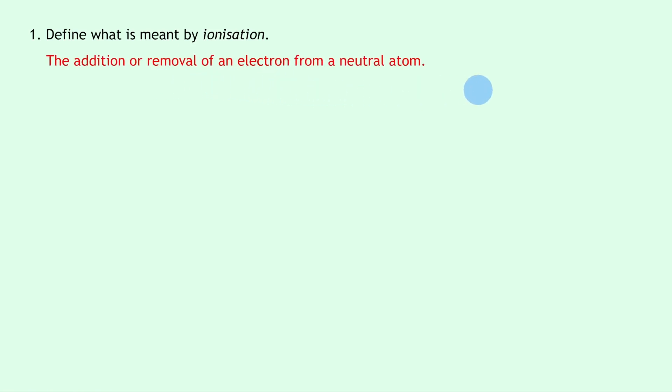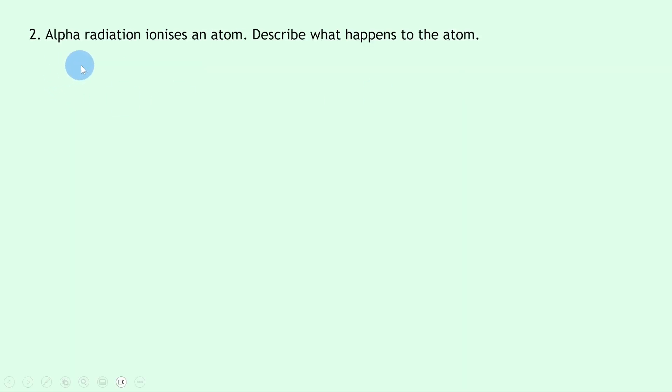Question two says alpha radiation ionizes an atom. Describe what happens to the atom. Well, remember, alpha particles are the same as a helium nucleus and are made up of two protons and two neutrons. That means alpha particles are positively charged, so if they come close to an atom, they can cause ionization.